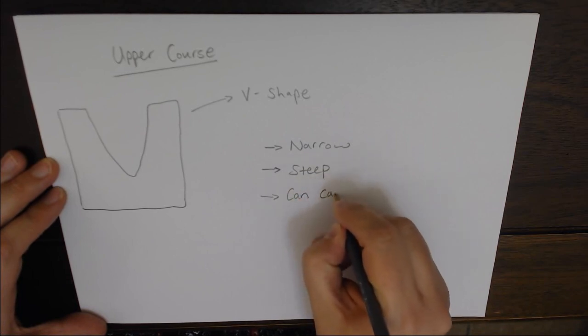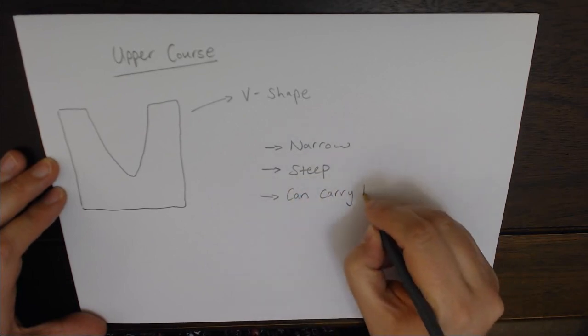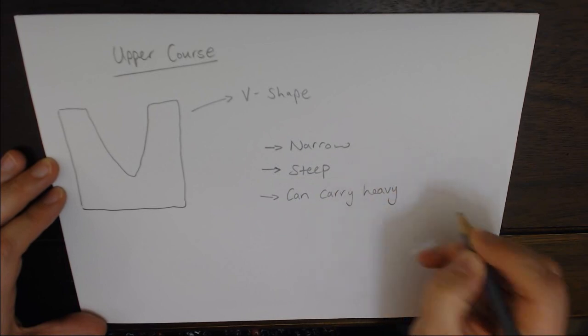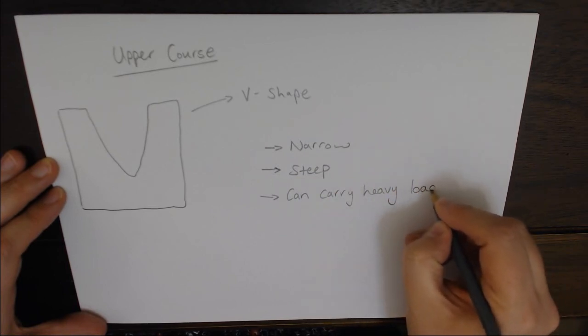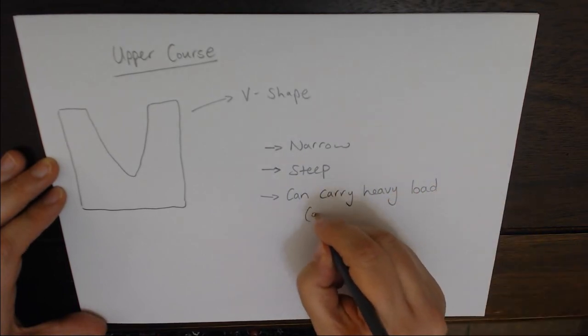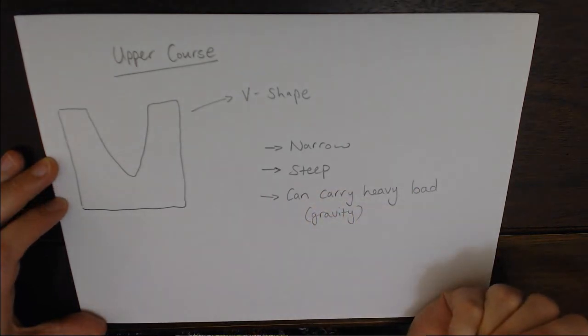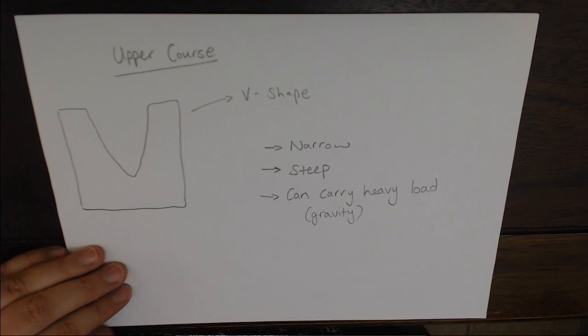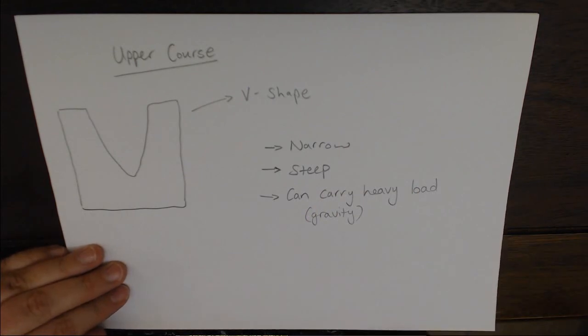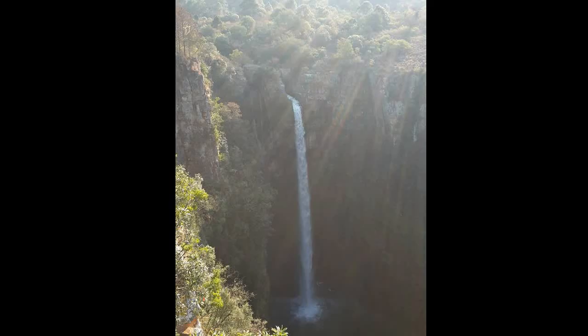The material, the load, is carried quite quickly, so it can carry a lot of heavy things because of that gravity. This is an example of the Mac Mac Falls in Mpumalanga. If you have a look at where the waterfall is actually coming out, you can see a V-shape, and that just shows quite nicely how the sides of that upper course are quite steep.